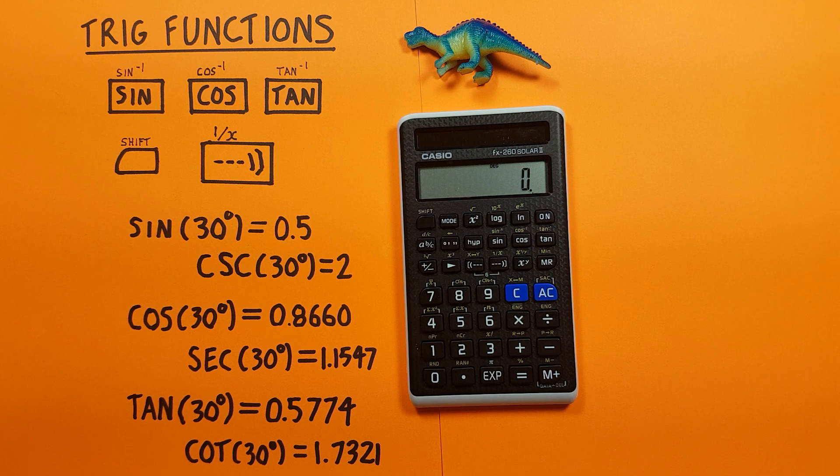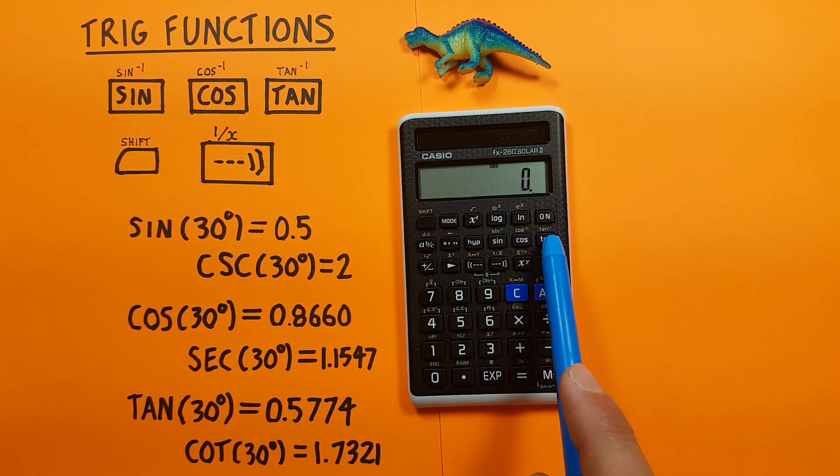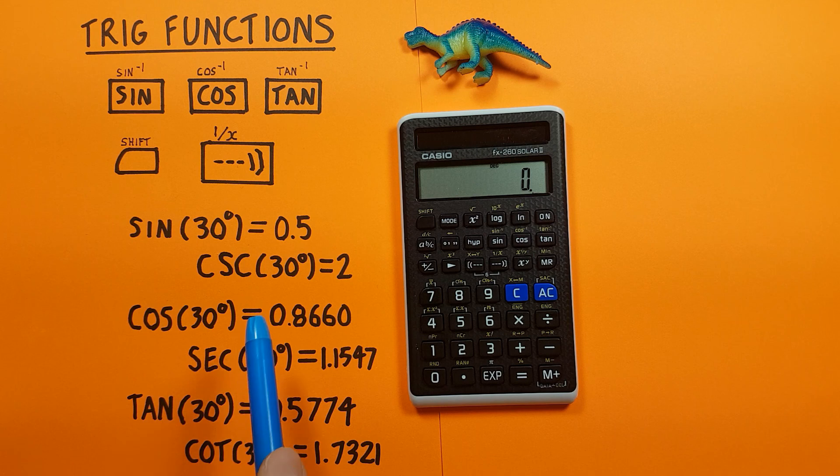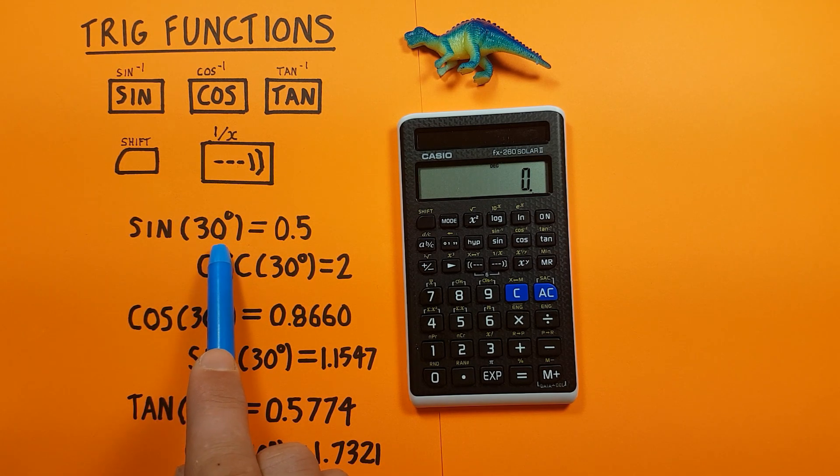We can also do arc sine, arc cos, and arc tan on this calculator by using the shift function of sine, cos, and tan—that's that sine^-1, cos^-1, and tan^-1 above the keys. And what this does is allows us to go from the result that we got, so for sine of 30, it allows us to take the 0.5 and go back to figure out how many degrees we used to get that.